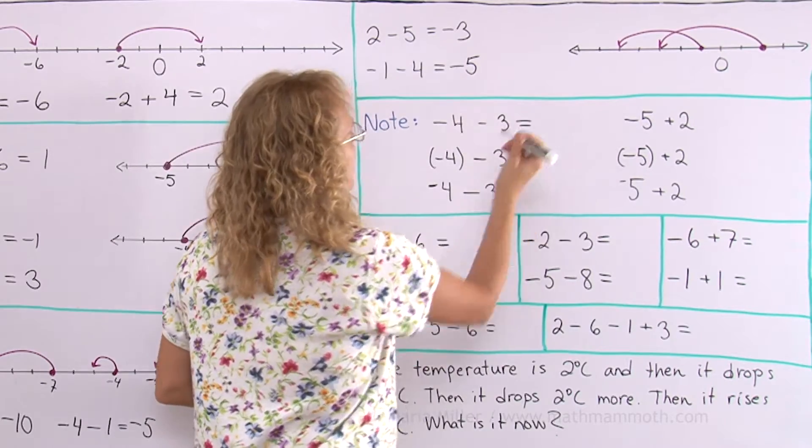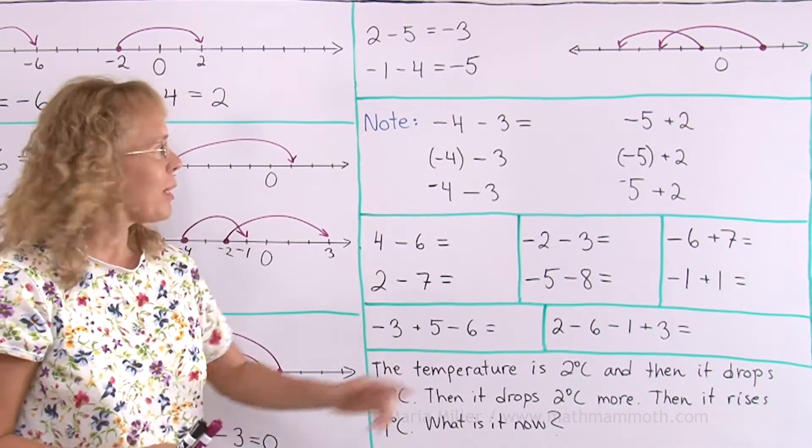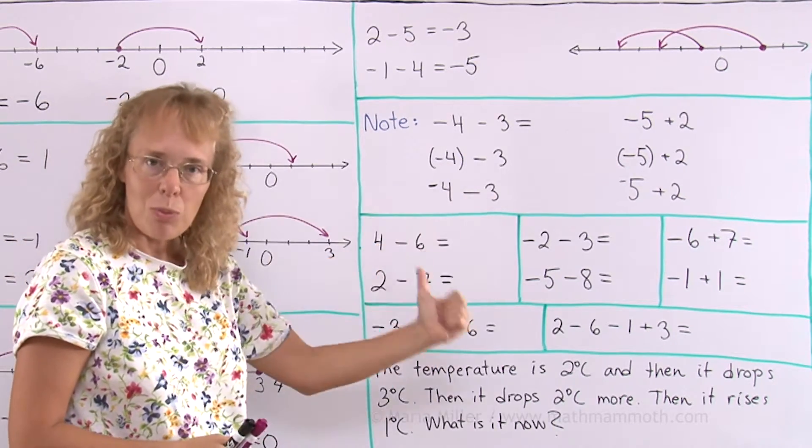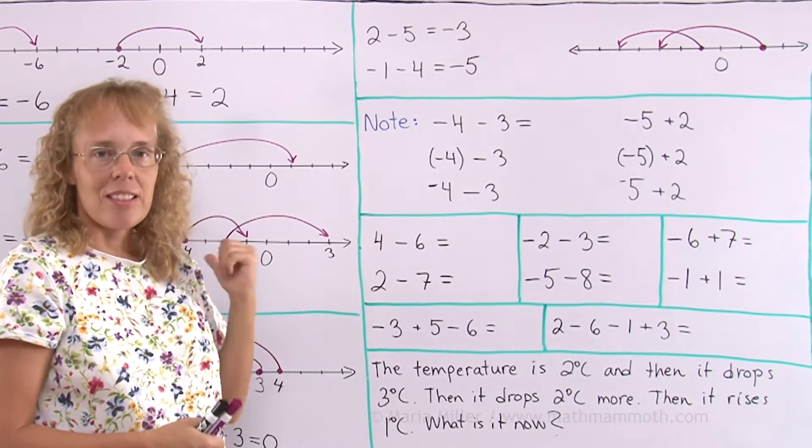Let's solve these, of course they all have the same answer. Imagine being at negative 4 and jumping three steps towards more negatives. So you end up at 7 negatives, right? Negative 7.